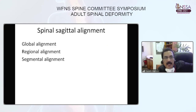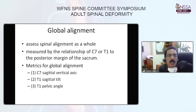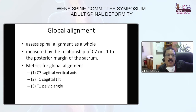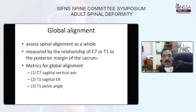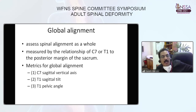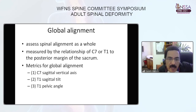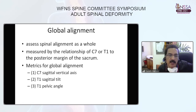Spino-sagittal balance can be grouped into global alignment, regional alignment, and segmental alignment. Global alignment refers to the spinal alignment as a whole, measured by the relationship of C7 or T1 to the posterior margins of the sacrum. The three metrics commonly used for global alignment measurement are the C7 sagittal vertical axis, T1 sagittal tilt, and T1 pelvic angle.